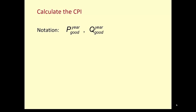Let's look at some notation first. We're interested in prices and quantities. We'll use the subscript to indicate the good and the superscript to indicate the year that variable took place. For example, we have the quantity of pizzas for 2015, and the price of CDs in 2017.